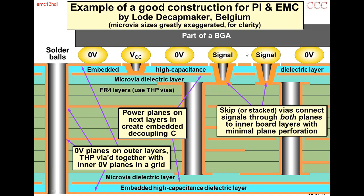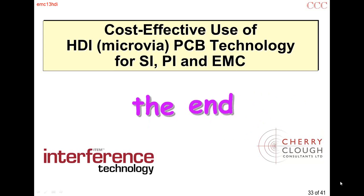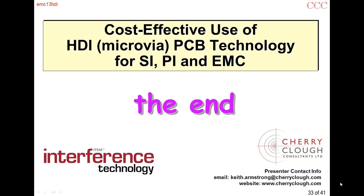With chip-scale packages, the solder balls will be much smaller and the chip much closer to the board. Being much closer to the ground plane means you get a much stronger image plane effect, which gives better shielding and better decoupling — and that's what we need to use chip-scale packages without causing lots of EMC problems. There are slides with references available to download from the Interference Technology website.